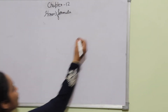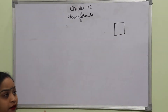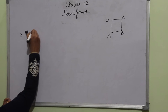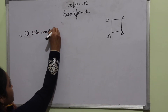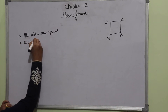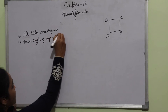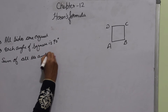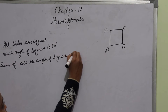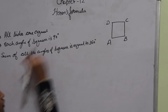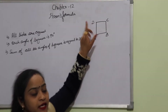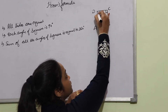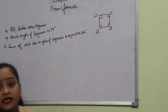First, we will discuss square. This is square ABCD. In this, all sides are equal. Each angle of the square is 90 degrees. Sum of all the angles of the square is equal to 360 degrees. That means AB, BC, CD, and DA — all sides are equal, and each angle is 90 degrees. 90 plus 90 plus 90 plus 90 is equal to 360 degrees.